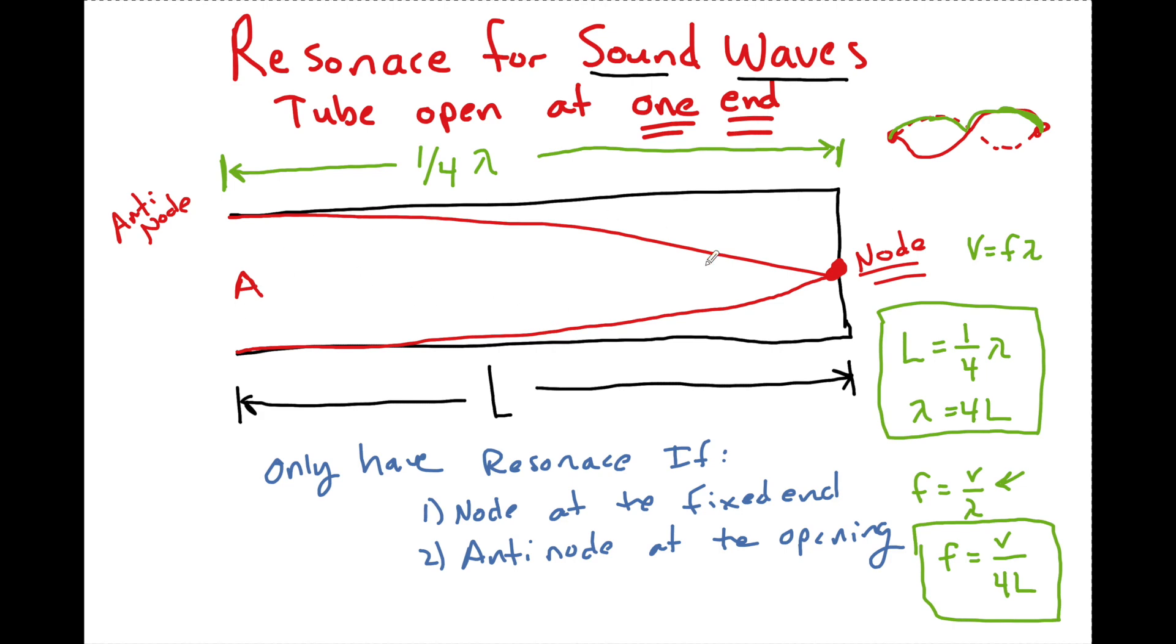This is the lowest, smallest one I can have. One node, one anti-node. So this is going to be referred to as the fundamental frequency when N equals one. The N numbers for sound waves inside a tube with a closed end can only go up by odd digits.